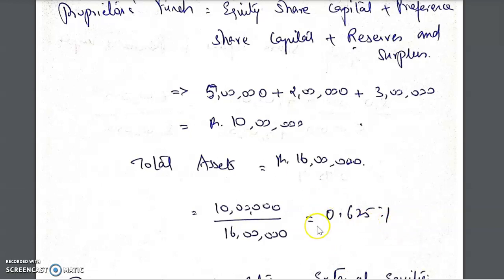A proprietary ratio of 0.625 means for every one rupee of assets, the proprietary liability is less than the asset, indicating the company is in a fairly strong position. Capital is always placed on the liability side because it is money the company must repay at some point — whether as preference dividends or returned capital. That is why when designing a capital structure you must be very cautious.